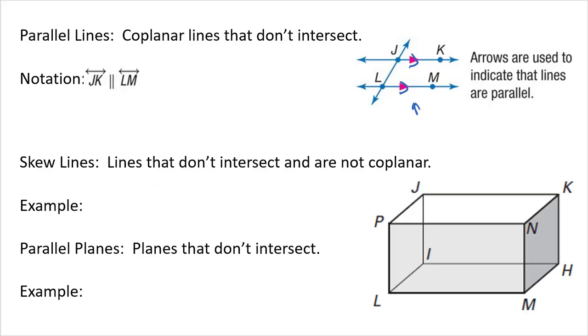Skew lines are lines that don't intersect and are not coplanar. So that would be an example of line JP and line NM. And these lines would never intersect.